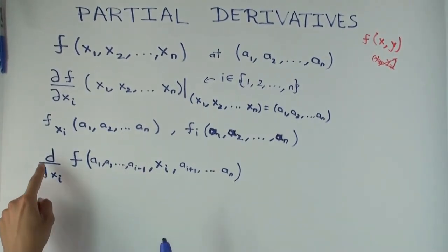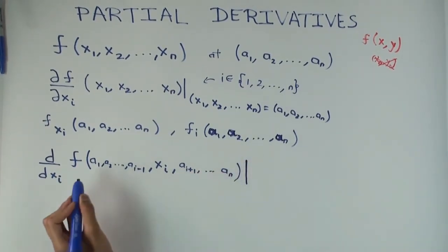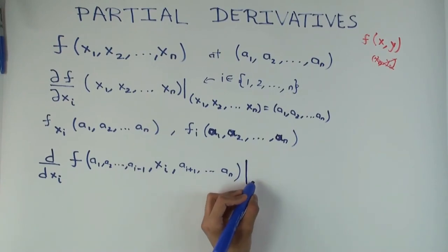And so since it's a function of one variable, I can just use the ordinary derivative. By ordinary derivative, I just mean the derivative, as you used to think of it as the derivative. And now I need to specify at what point I'm evaluating.